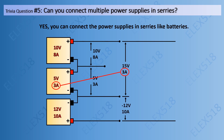Additionally, you can get negative 12 volts at 10 amperes because that power supply is connected in reverse. Overall, you can get 3 volts at 3 amperes — again, following the lowest power supply current rating. The 3 volts is the summation of 10 volts, 5 volts, and negative 12 volts.